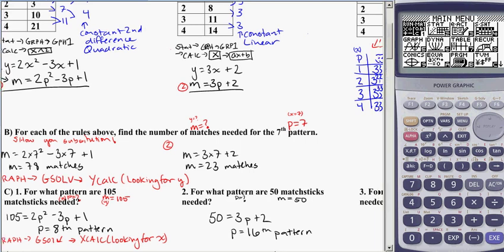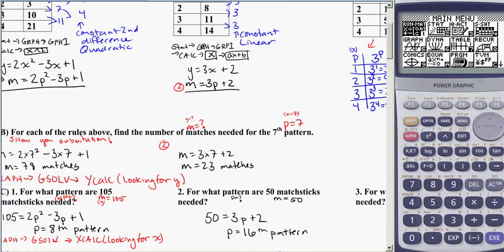So carrying on with our exponentials, now we're going to look at using the rule like we've done before. For each of the rules above, find the number of matches, so m, needed for the seventh pattern.